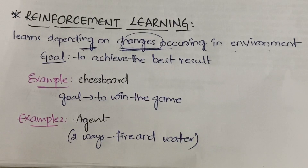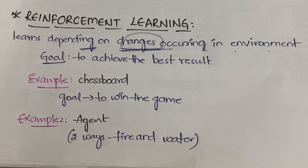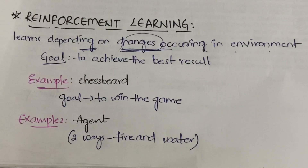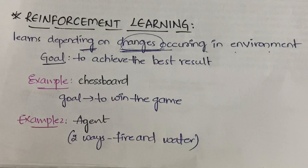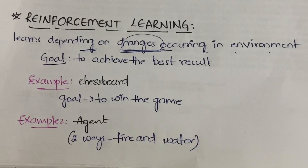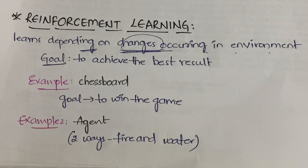For example, when you are playing a game, initially whatever moves you are doing are not known to the game — the game doesn't know what you will do initially. But as you play, depending on the moves you are making, the game will be changing. In the same way, reinforcement learning learns depending on the changes happening in the environment. It mainly depends on the environment and external factors.